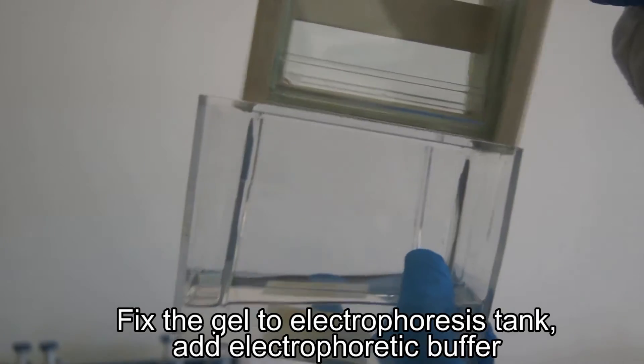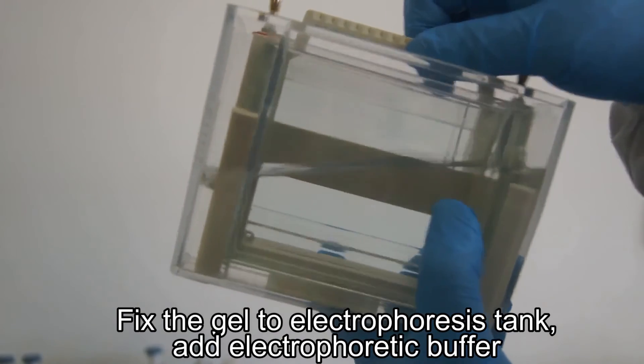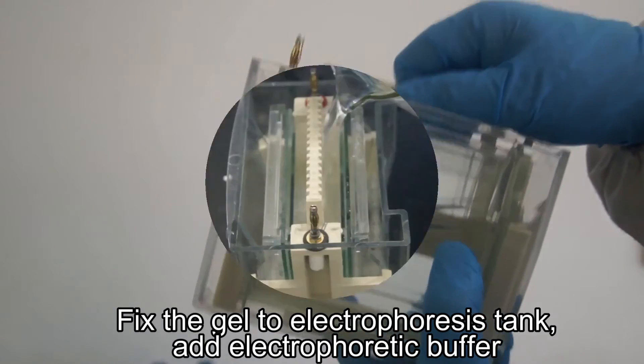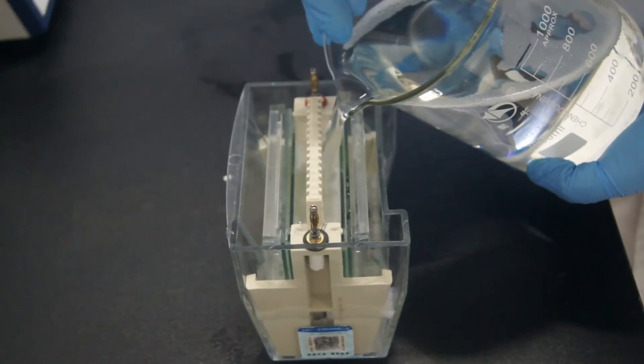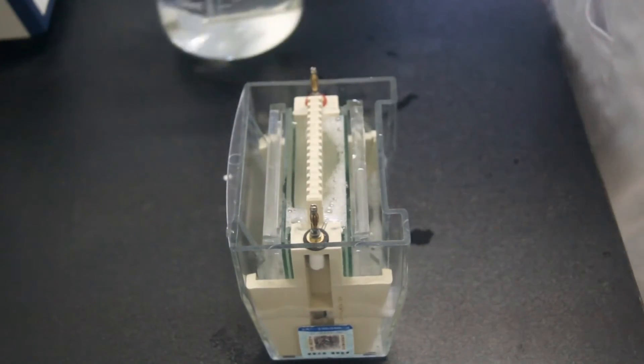Electrophoresis: Add some electrophoretic buffer to the electrophoresis chamber. Then fix the gel into the electrophoresis chamber. Add electrophoretic buffer to the electrophoresis chamber. Rinse all wells with electrophoretic buffer.